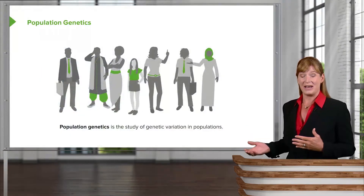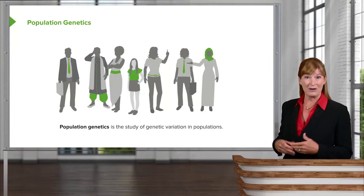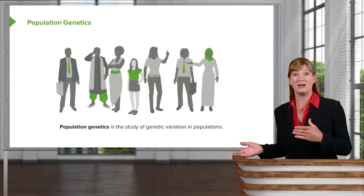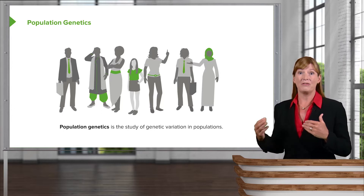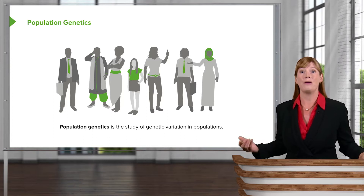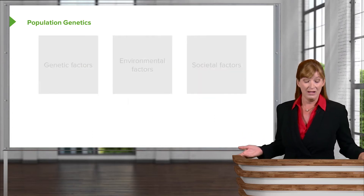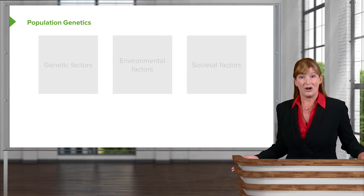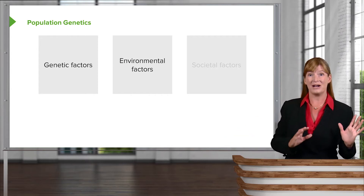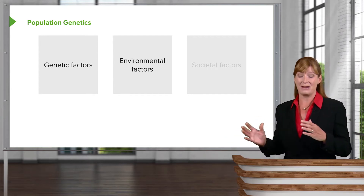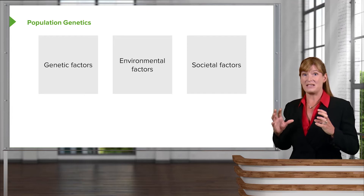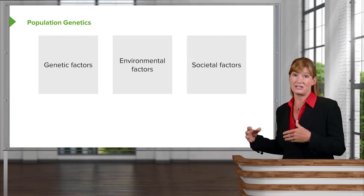Population genetics is the basis of Hardy-Weinberg Law. We care about it because we are given statistics very often about the frequencies of various genetic disorders, and we need to understand where those numbers come from. The factors that go into population genetics include genetic factors, environmental factors, and societal factors — a number of different aspects that influence the frequency of alleles in populations.